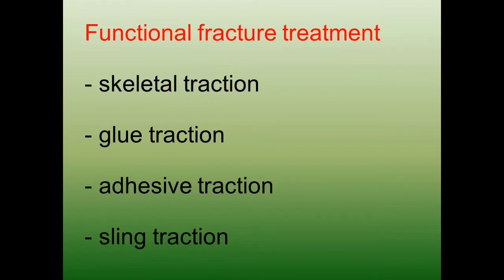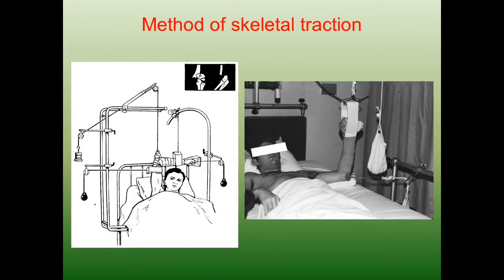The functional method of treatment keeps joints free from immobilization, preventing stiffness. It uses traction in different forms: skeletal traction by placing a K-wire through the bone, adhesive or glue traction to the skin, and sling traction. Typically the patient remains in bed with the traction system applied.